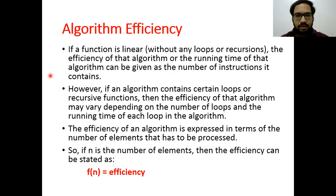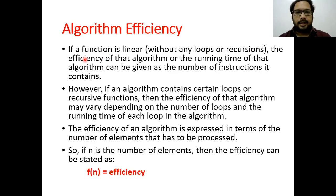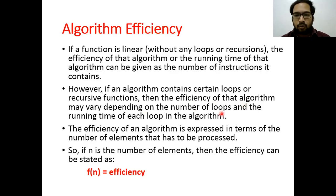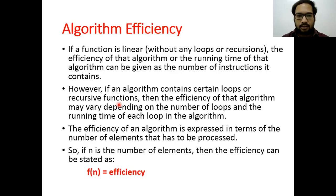Starting my explanation for algorithm efficiency. The first point says: if a function is linear without any loops or recursion, the efficiency of that algorithm — or the running time — can be given as the number of instructions it contains. However, if an algorithm contains loops or recursive functions, then the efficiency may vary depending on the number of loops and the running time of each loop.